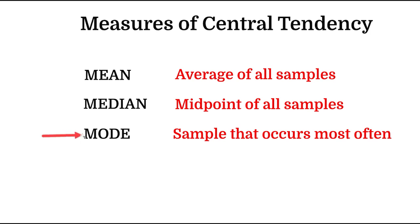The third measure of central tendency is mode. It is the least used measure compared to mean and median. To obtain mode, we don't need to sort the data — we just find the value that occurs most often. Mode is the number that has the highest probability of occurring within the sample. For example, if the number five occurs most often, then our mode is five, but mean and median may be different.